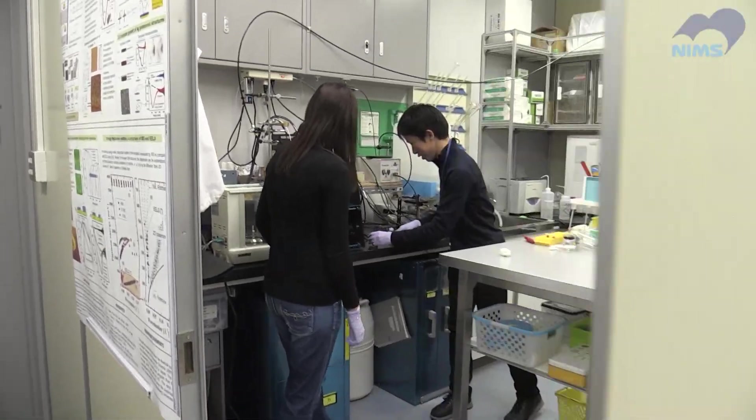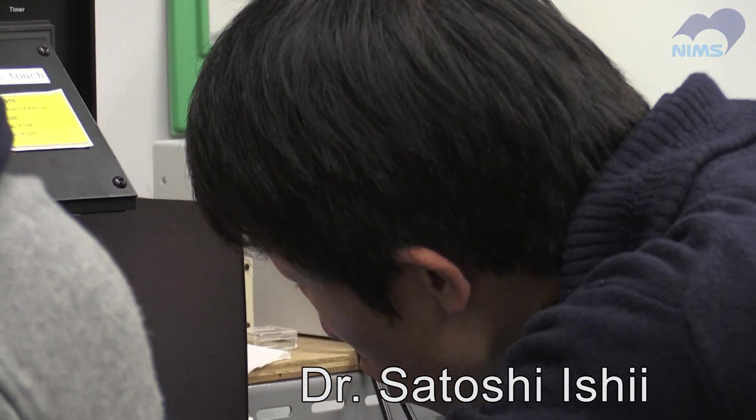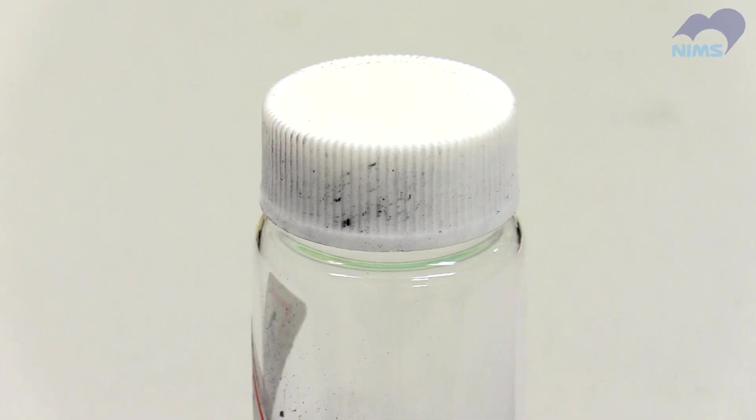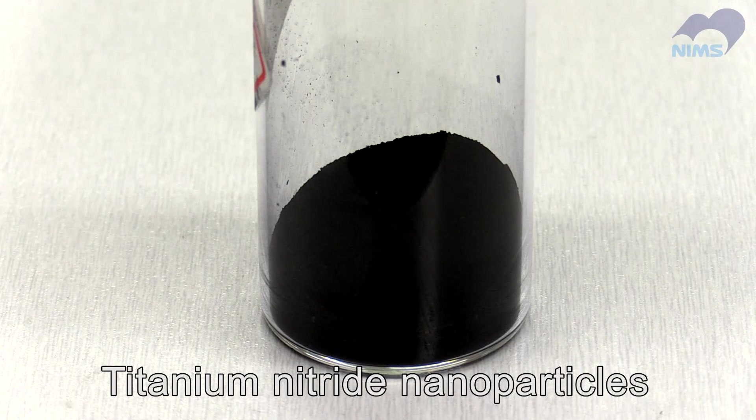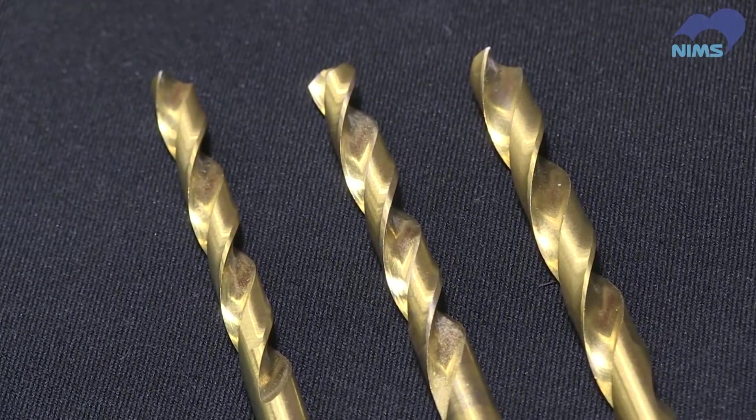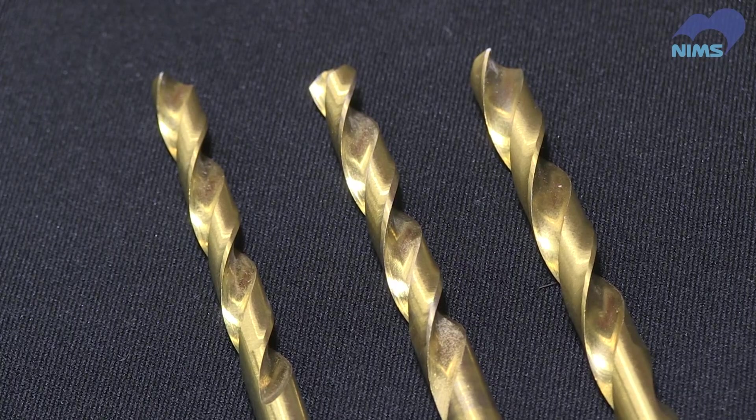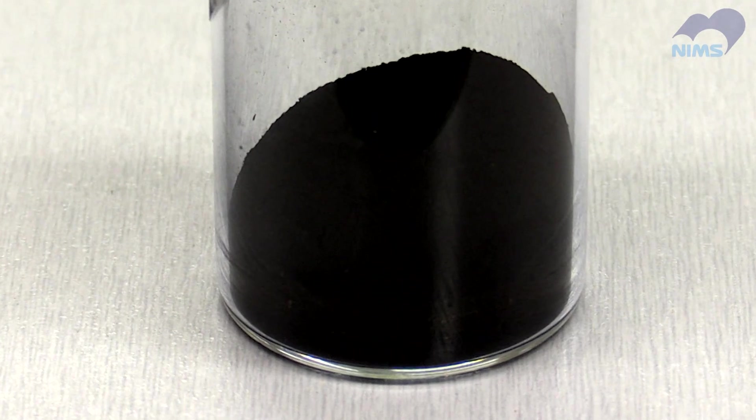The researcher in charge of developing this material is Dr. Satoshi Ishii. The rapid evaporation occurs due to the addition of this black nanoscale powder made of titanium nitride. Titanium nitride is widely used in drill bits as a coating material. However, this metallic shine is not present in nanoparticles of the material because they absorb visible light efficiently.